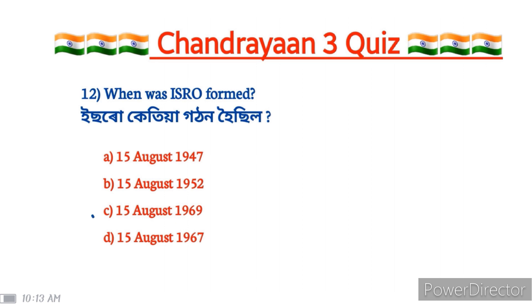The correct answer is option C: 15 August 1969. ISRO was established on 15 August 1969, and some say 25 August as another referenced date.